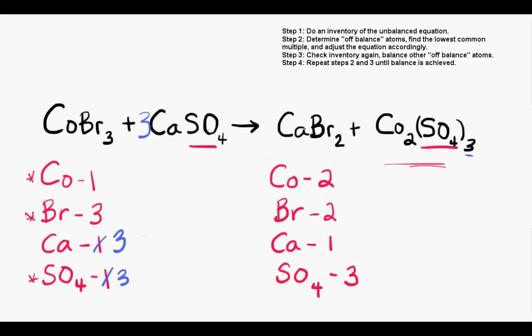But leave calcium alone for now because we still need to balance the other element in cobalt-3 sulfate, the cobalt itself. There's two cobalts in cobalt-3 sulfate on the right, but only one in cobalt-2 bromide on the left. So that's a quick fix. We can balance cobalt by putting a coefficient of 2 in front of cobalt-2 bromide.